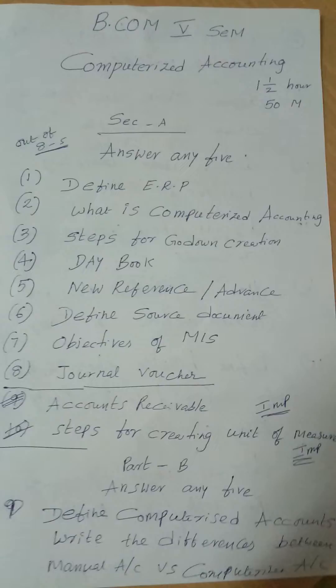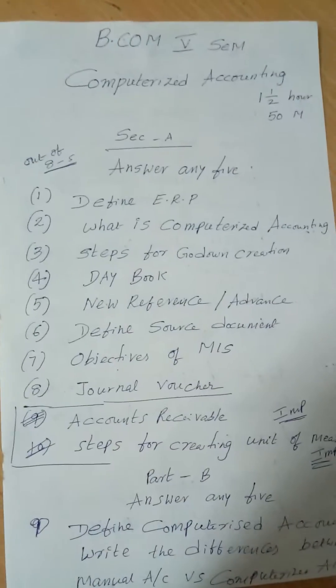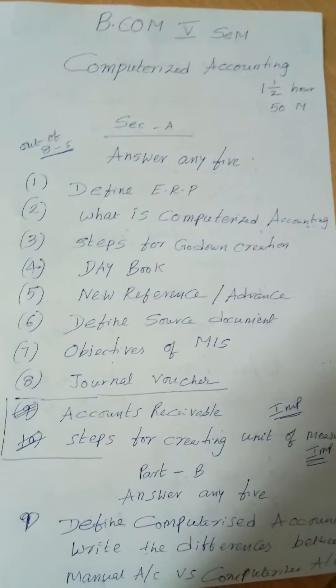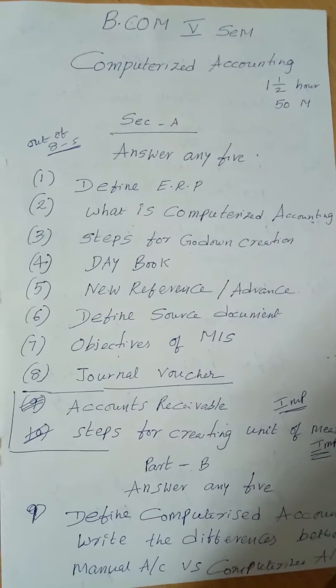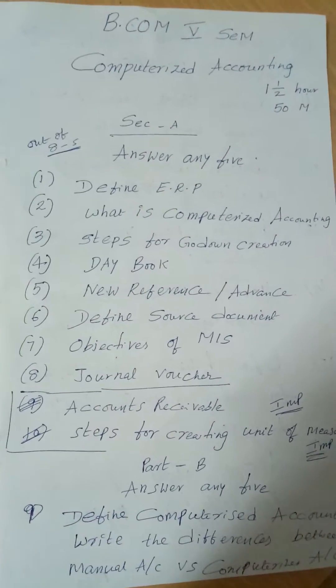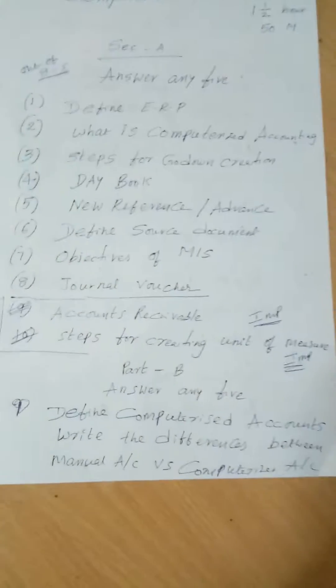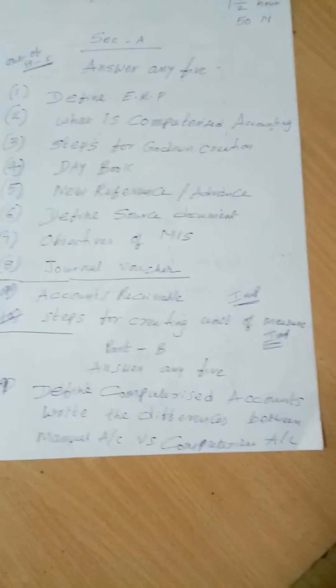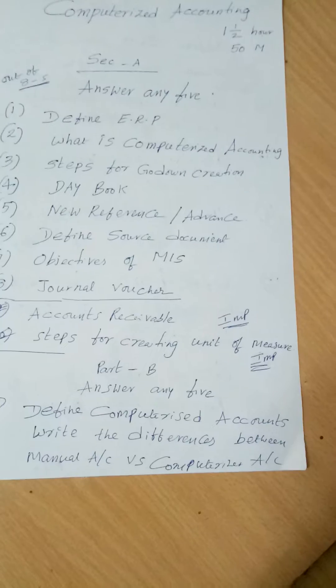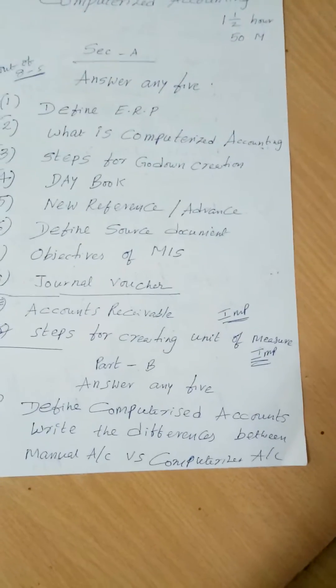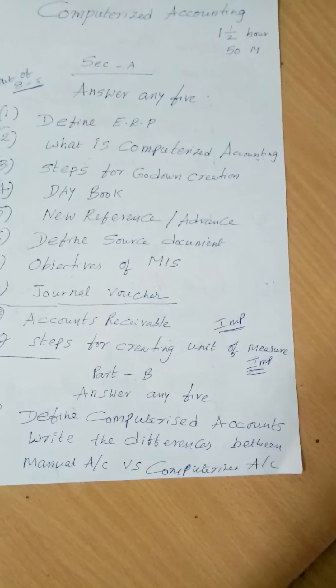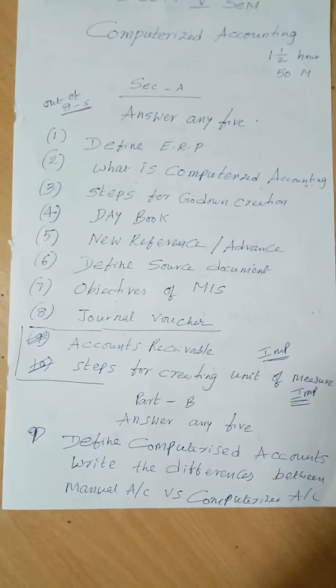I am going to ask the definition of 2 marks. Define computerized accounting. Write the differences between manual accounting and computerized accounting.